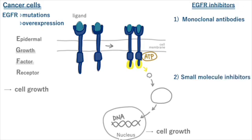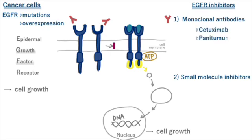As the name suggests, monoclonal antibodies are antibodies against receptors. They inhibit signal transduction by preventing ligands from binding to receptors. The main EGFR monoclonal antibody drugs are cetuximab and panitumumab. Since 'mab' is at the end of the word, you can tell it's a monoclonal antibody.